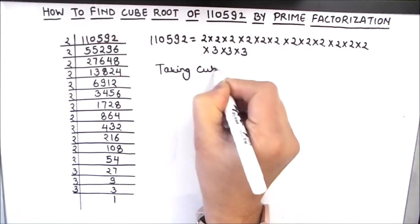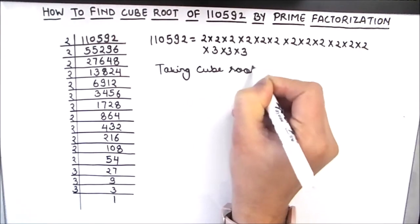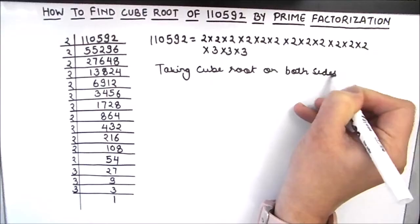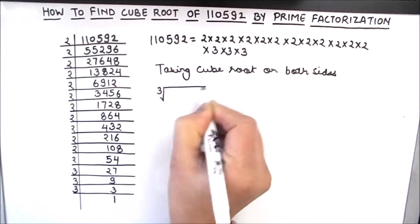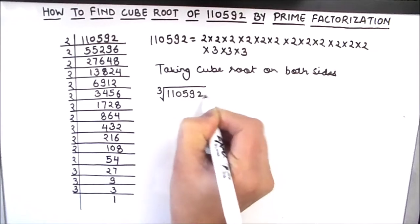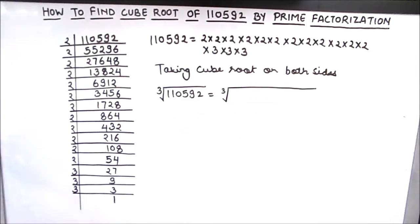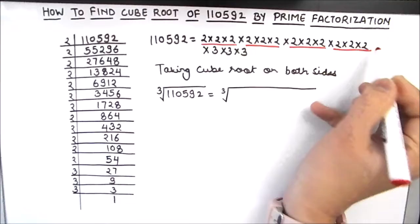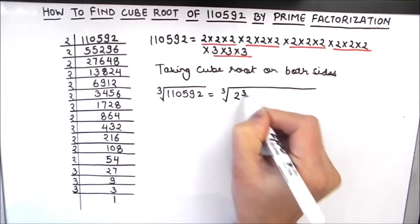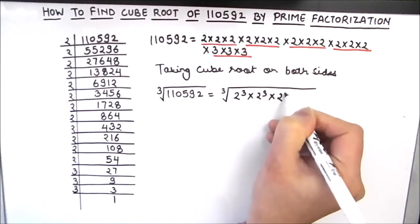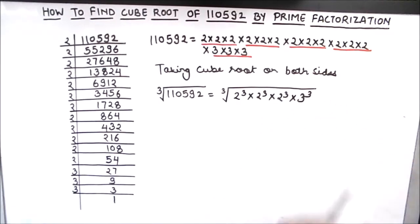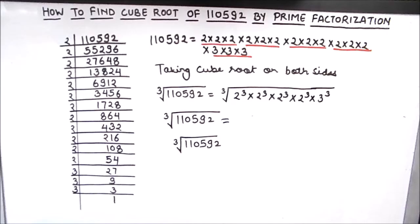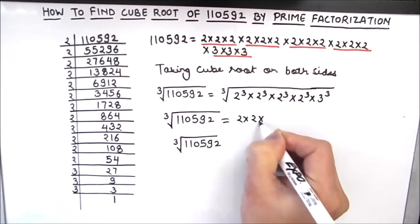As we are finding the cube root, we are going to take the cube root on both sides. So the cube root of 1,10,592 is equal to the cube root of its prime factors. We can write all these numbers in the form of cubes: 2 cubed times 2 cubed times 2 cubed times 3 cubed. Since these numbers are perfect cubes under the cube root sign, the cube root of a cubic number is the number itself, so all these numbers will come out of the cube root sign.